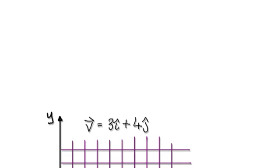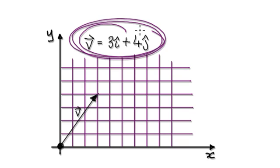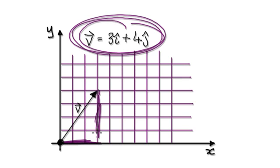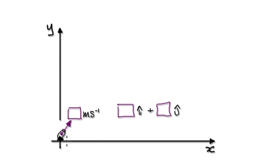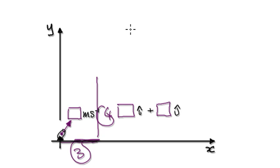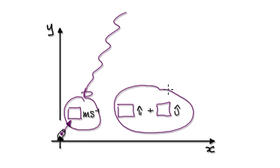Let's give you guys some more practice. So here you've got your velocity vector — three across, four up. You can imagine this as having a cannon and shooting it three across and then four up. So even though I've given you the velocity in vector form, you can always translate it into speed and direction.